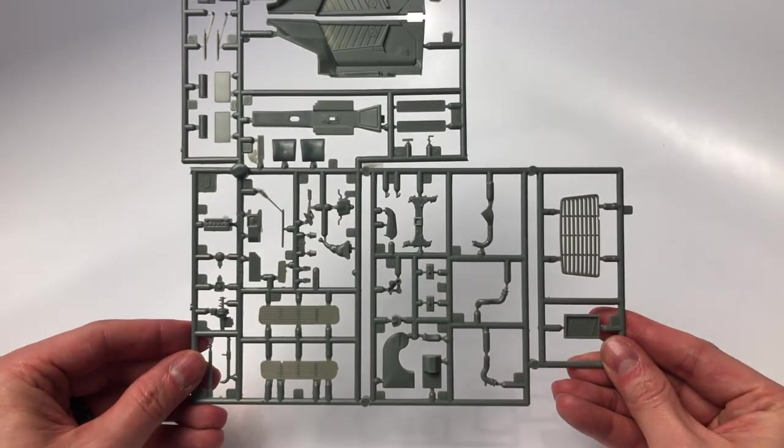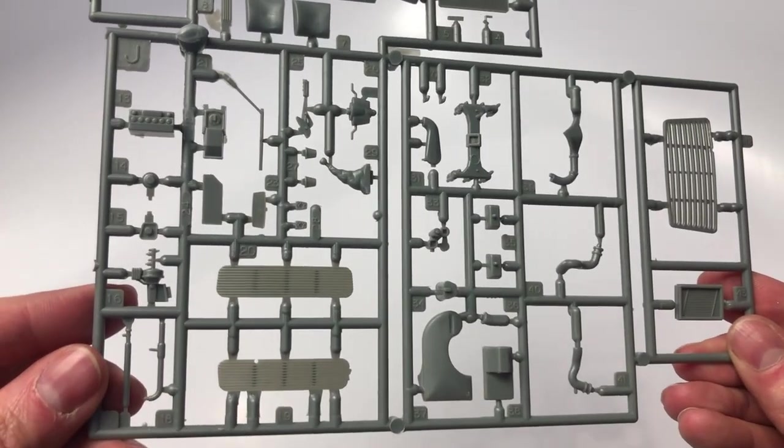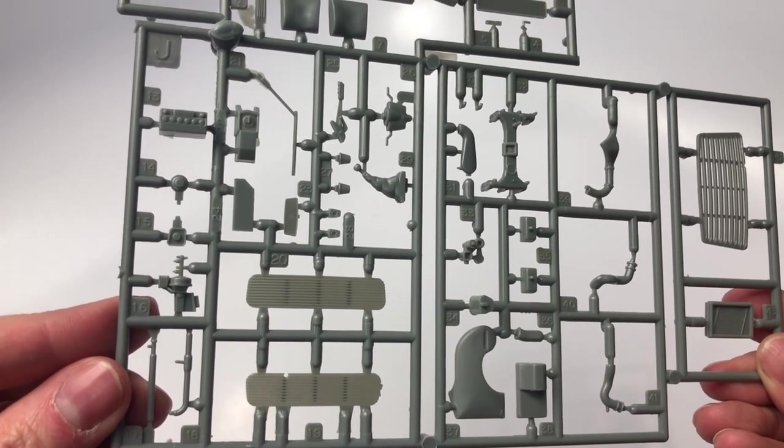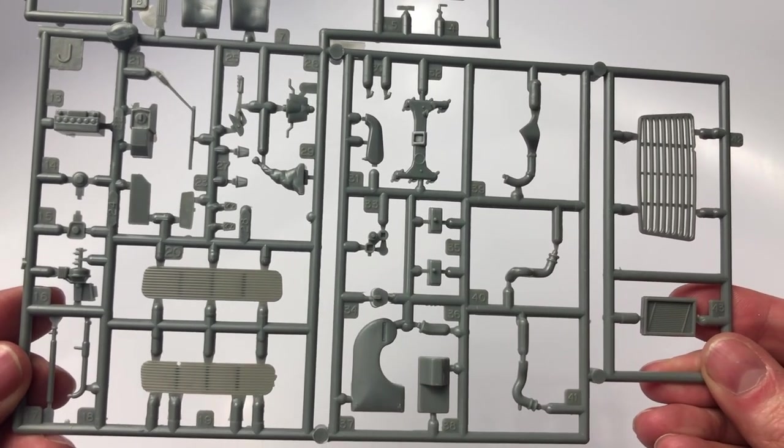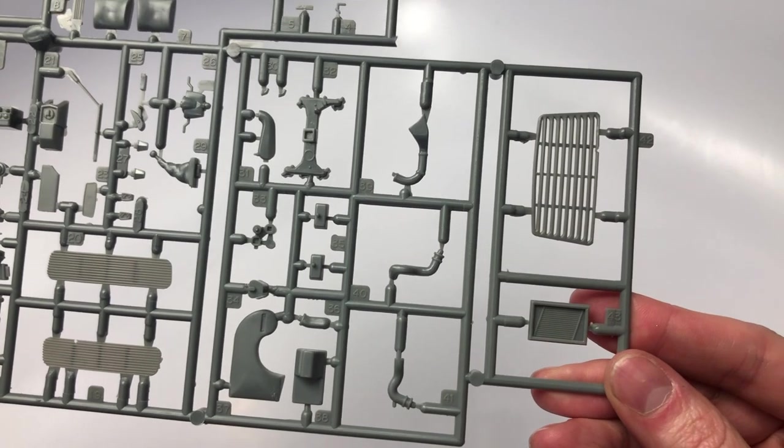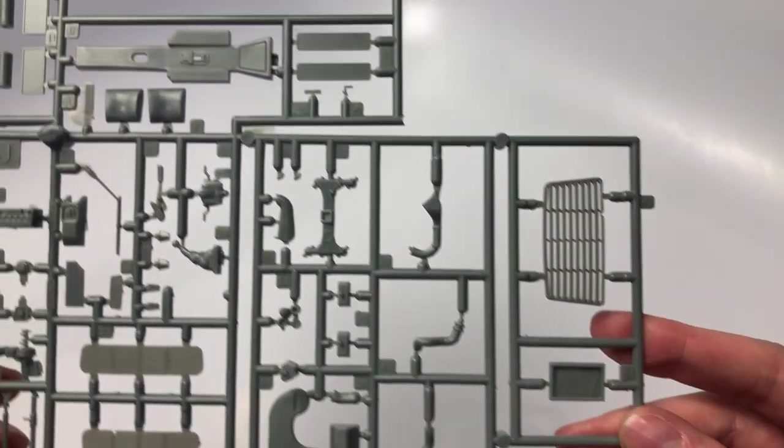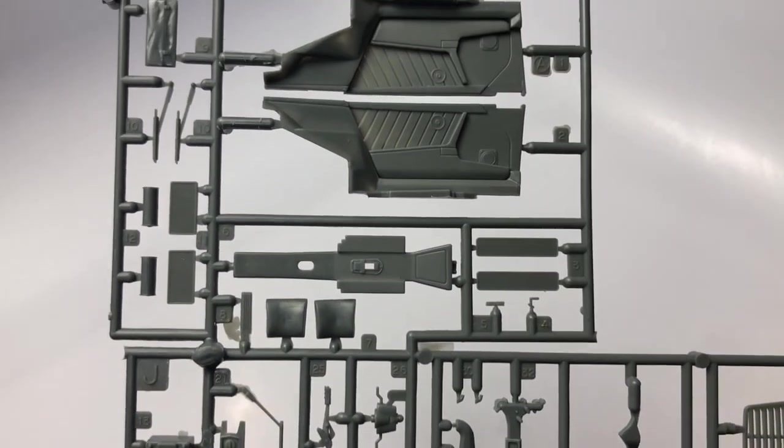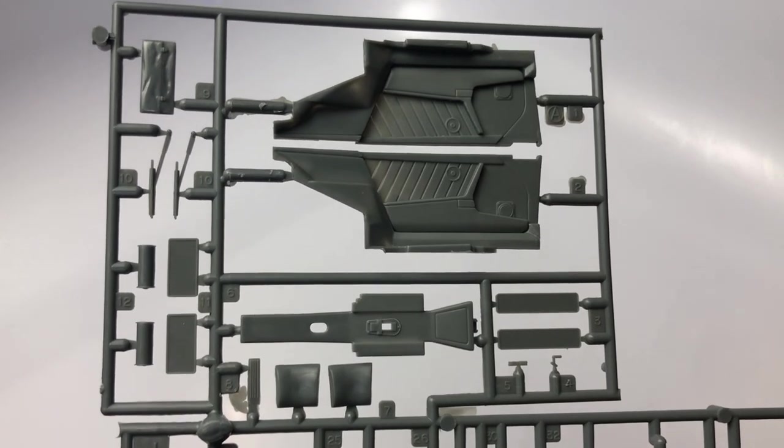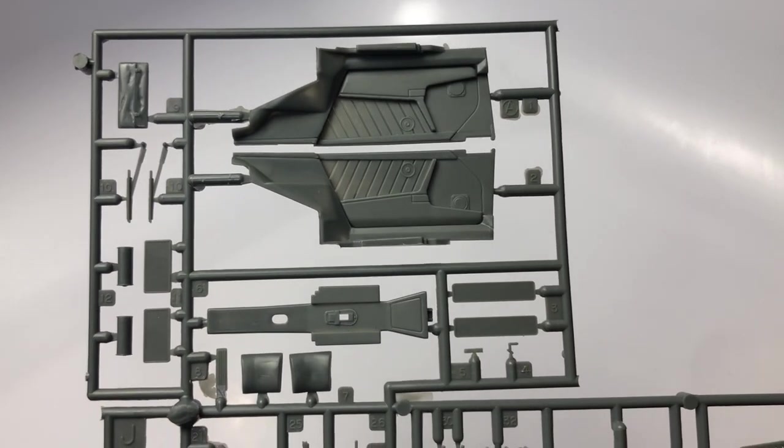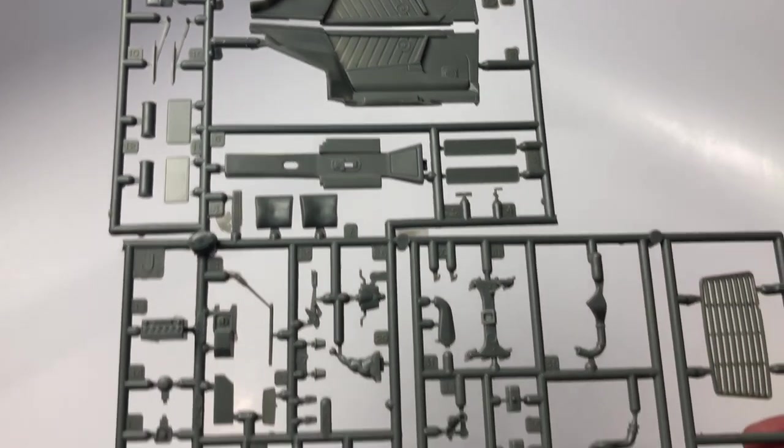Moving on to the next sprue, we see parts for the engine, which are well-defined. We also see the brake cylinder, manual stick shift, handbrake, which is crisp on the details, the steering column, the rear engine compartment cover, and the door carts. This so far is turning out to be a great looking kit.